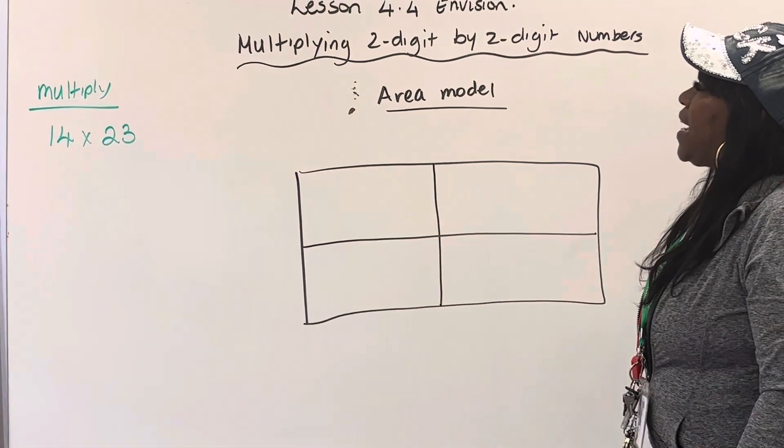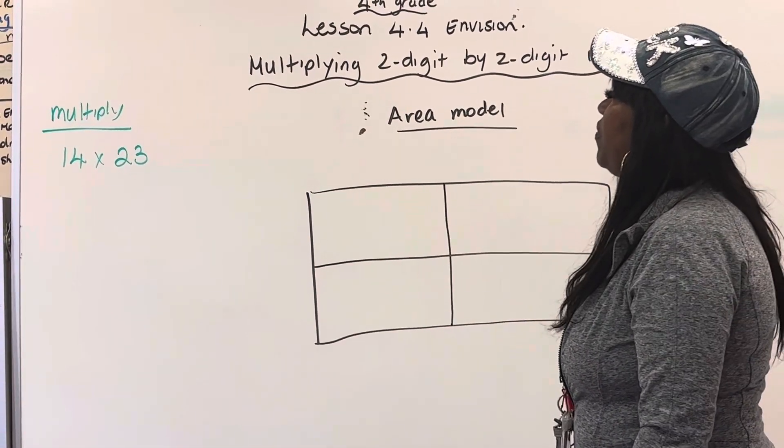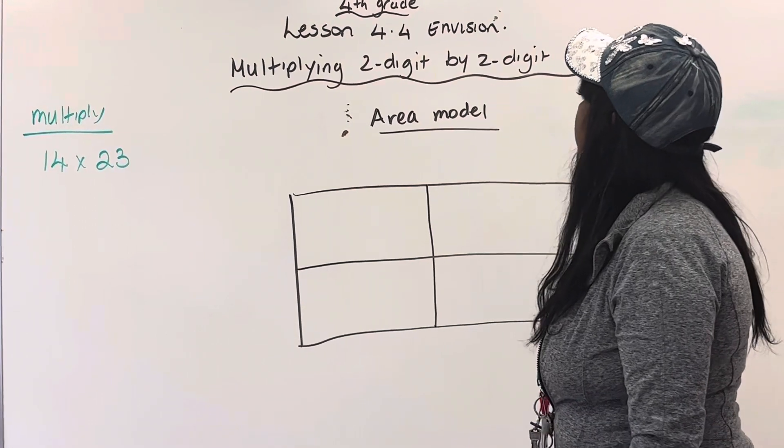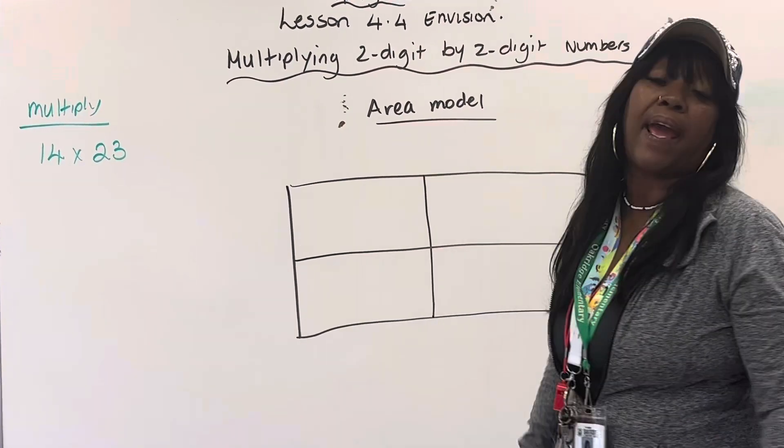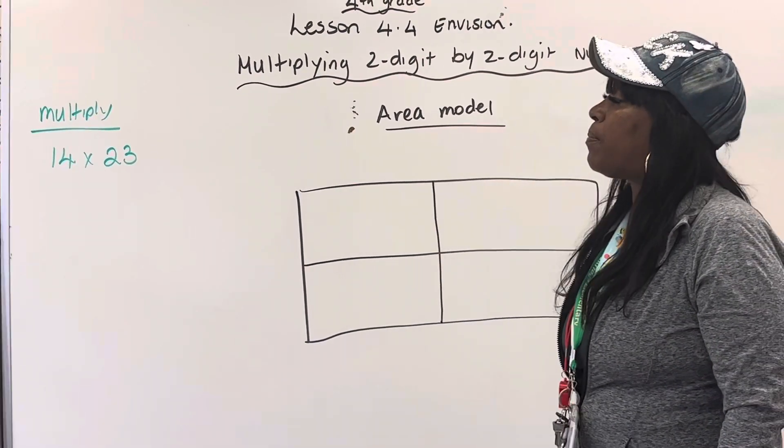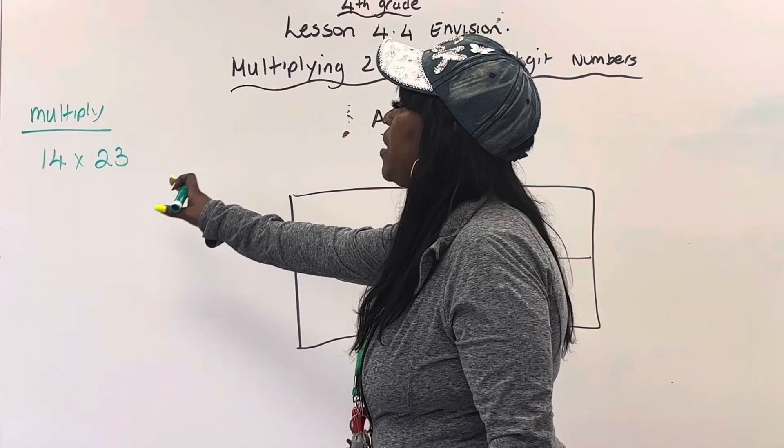Good morning students. Today our lesson 4.4 in Envision book will be multiplying two-digit by two-digit numbers using the area model. Today we're going to multiply 14 times 23.